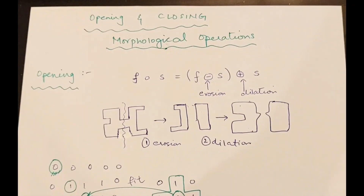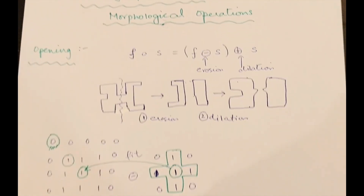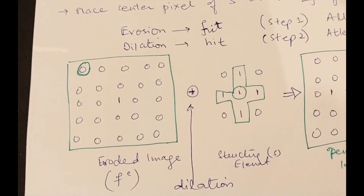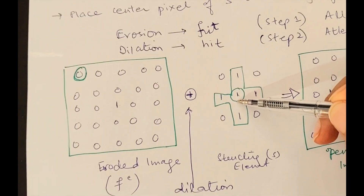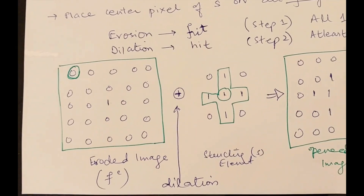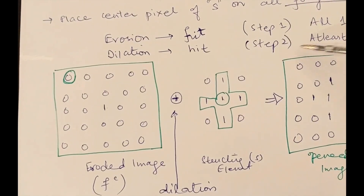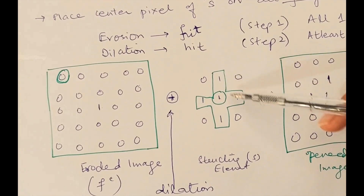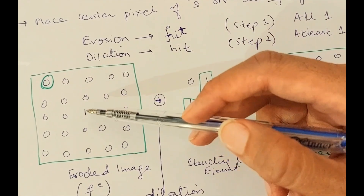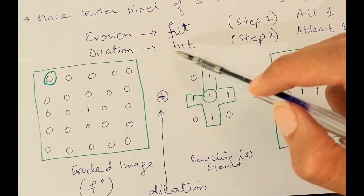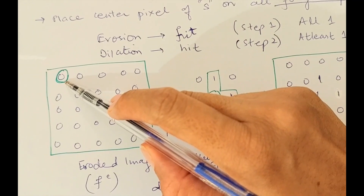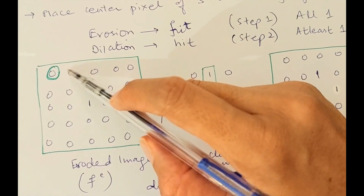As the opening equation states, after erosion I have to perform dilation. To perform dilation, I use the same structuring element on the eroded image, placing the central one pixel one by one on all the background pixels. Dilation requires the hit principle: if at least one of the ones of the structuring element coincides with any one in the image, the resultant central pixel becomes one. For dilation we start from the background pixels.